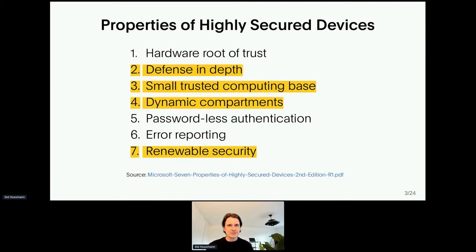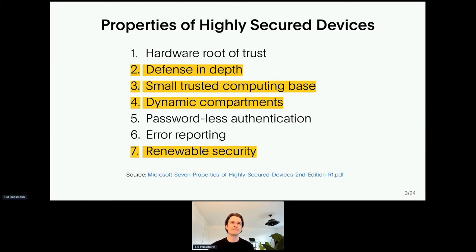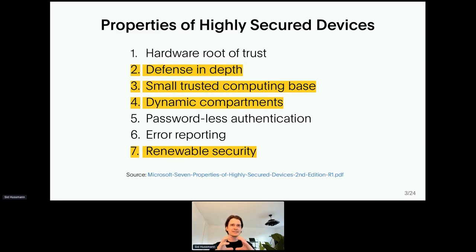Microsoft Research published an excellent paper where they identified seven properties of highly secured devices. First, hardware root of trust — Ian already talked about TPMs, and this is essential. Second, defense in depth. Exploiting a likely bug in a driver or a network stack is fatal. Defense in depth means every component is strongly isolated and access to resources and services is limited to what they really need.